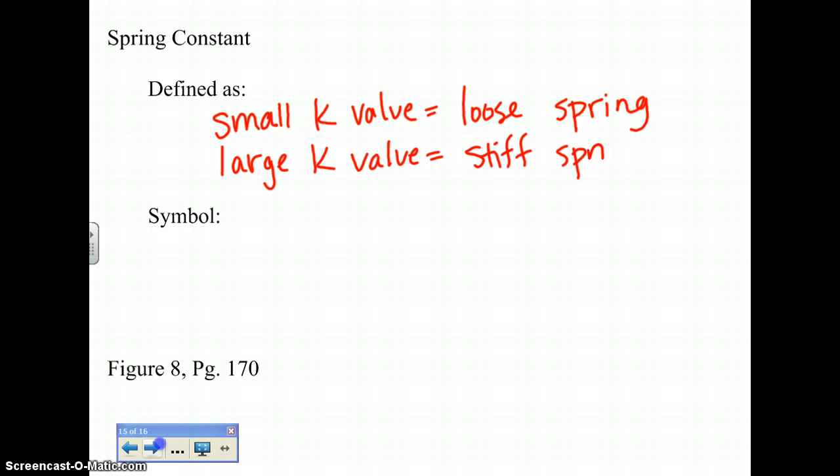Spring constant, more specifically, is defined as, and all we really want you to know right here is, if you have a small k value, that means that you're going to have a very loose spring. It's not going to take a lot of force. Whereas if you have a large k value, it's going to be a very stiff spring in which you would have to assess a lot of force to it.